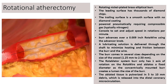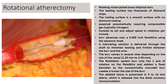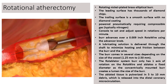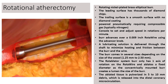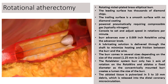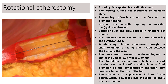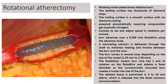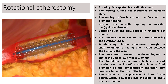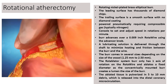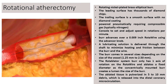Rotational atherectomy is a device with a rotating nickel-plated brass burr. It has a leading edge with thousands of diamond chips while the trailing surface is smooth. It is powered pneumatically using nitrogen gas and has a console to set and adjust the speed and rotations. It is advanced over a 0.009-inch wire using an advancer knob with a lubricating solution. The burr comes in sizes from 1.25 to 2.5 mm, and the burr-to-artery ratio should be 0.5 to 0.7 — for example, for a 3 mm vessel, choose a 1.5 mm burr. You should not oversize the burr. The system has one axis of rotation, ablating a fixed diameter, and ablated tissue is pulverized into 5 to 10 micron debris released into the distal coronary microcirculation.